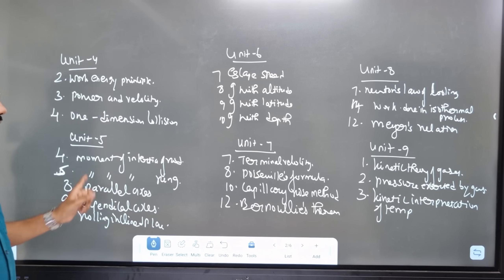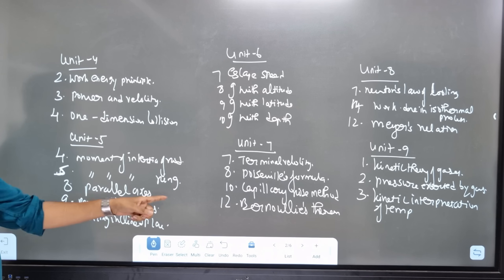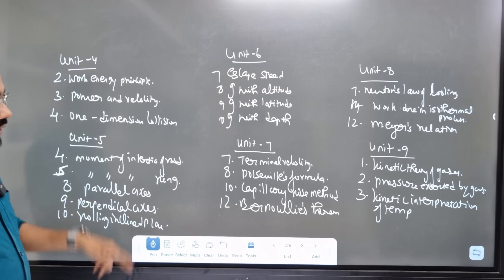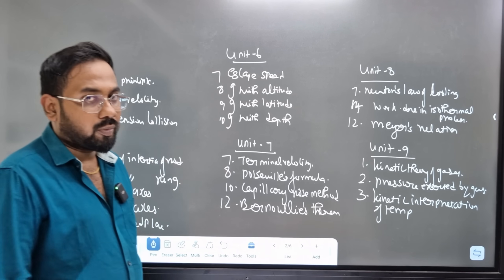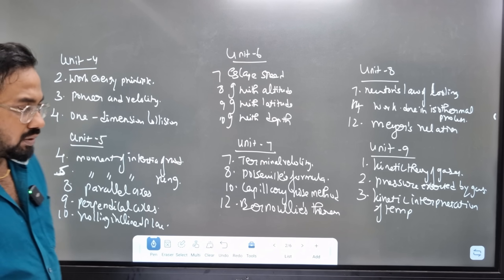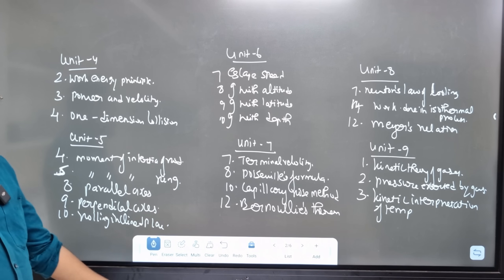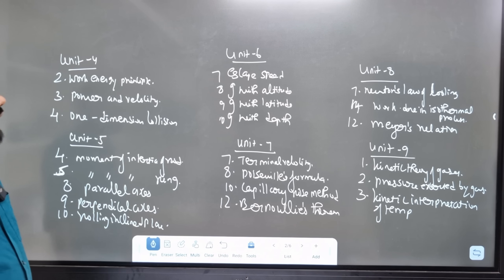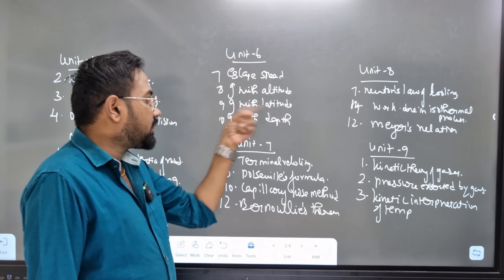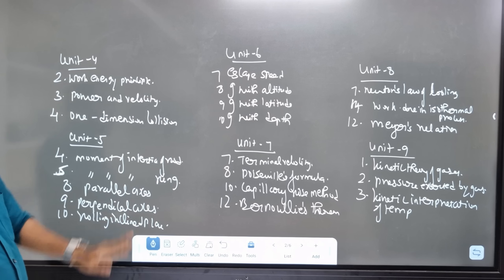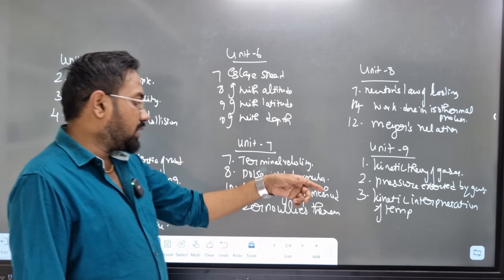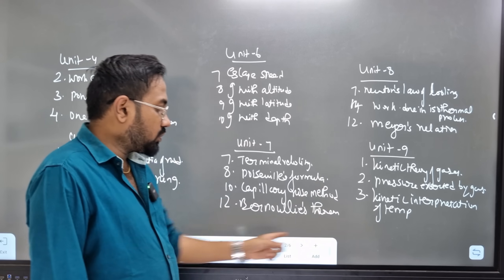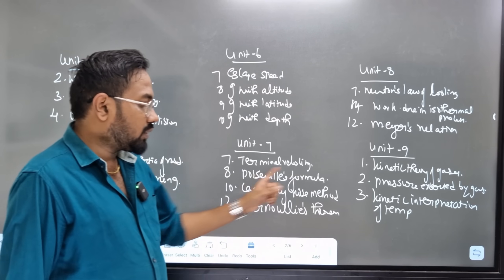Unit 5 covers moment of inertia of a rod, moment of inertia of a ring, parallel axis theorem, perpendicular axis theorem, and rolling. There are two questions on moment of inertia. Unit 7 includes the derivation of terminal velocity and Poiseuille's law. The capillary rise method is a 5-mark question.